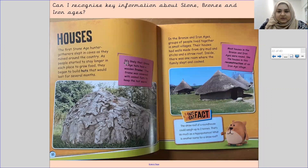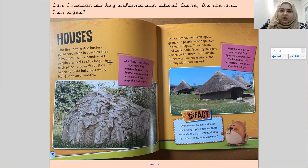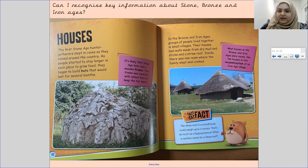The first Stone Age hunter-gatherers slept in caves as they moved around the country. As people started to stay longer in each place to grow food, they began to build huts that would last for several months. It's likely that Stone Age huts had a wooden frame, and the frame was covered with animal furs to keep the hut warm.